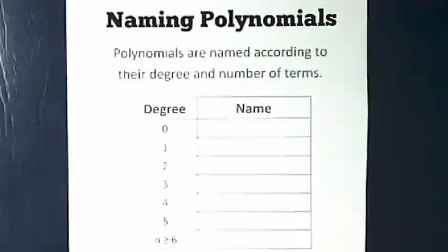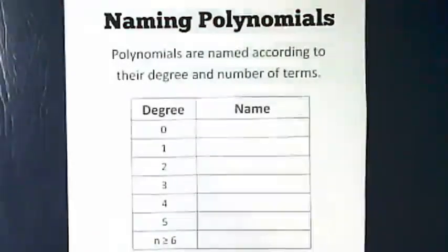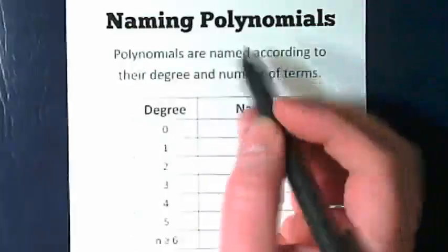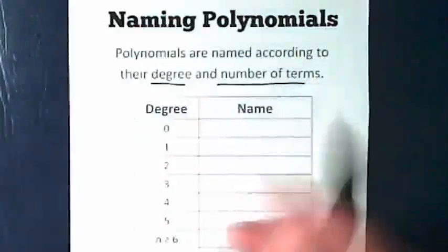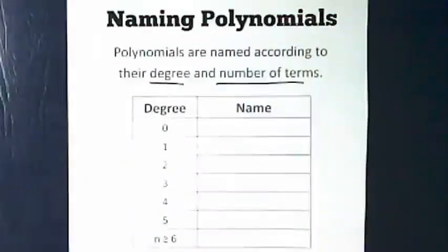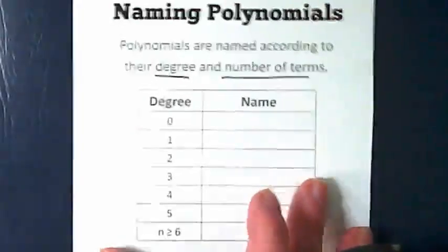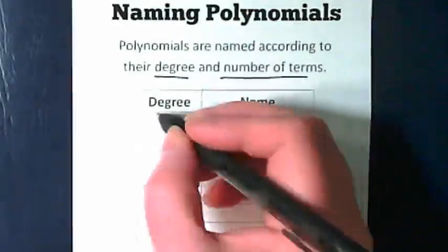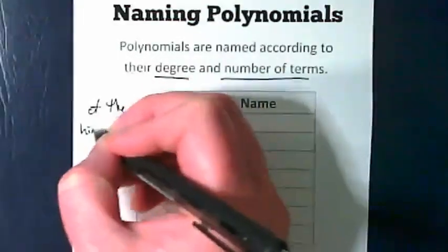Okay, so naming polynomials is a thing we do. We talk about these according to their name, and they are named according to their degree and their number of terms. It's like we give them a first name and a last name based on what's involved in their polynomial. So for the degree, for the degree of the highest exponent...